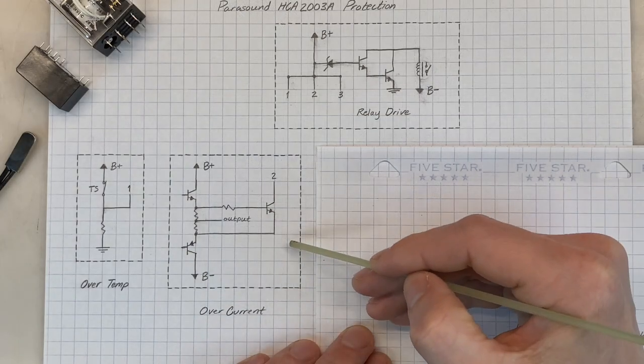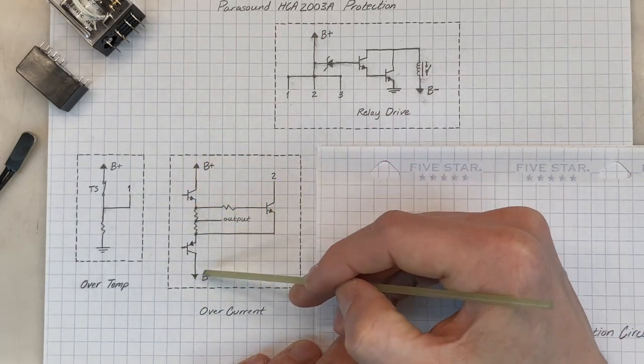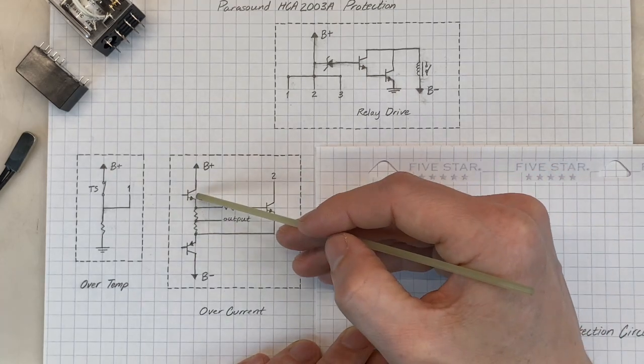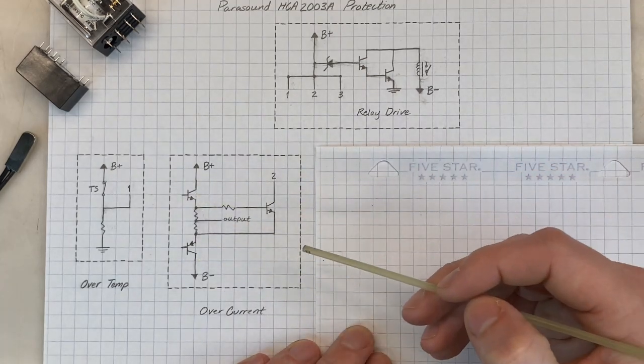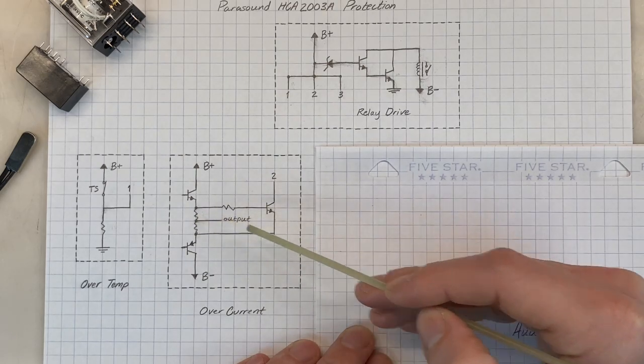Sub-circuit 2 is over current. Here we have the output of the amplifier. So our positive and negative supply rails, the final output transistors on the positive and negative side, their respective emitter resistors, and finally the output to the relay and hopefully the speaker.